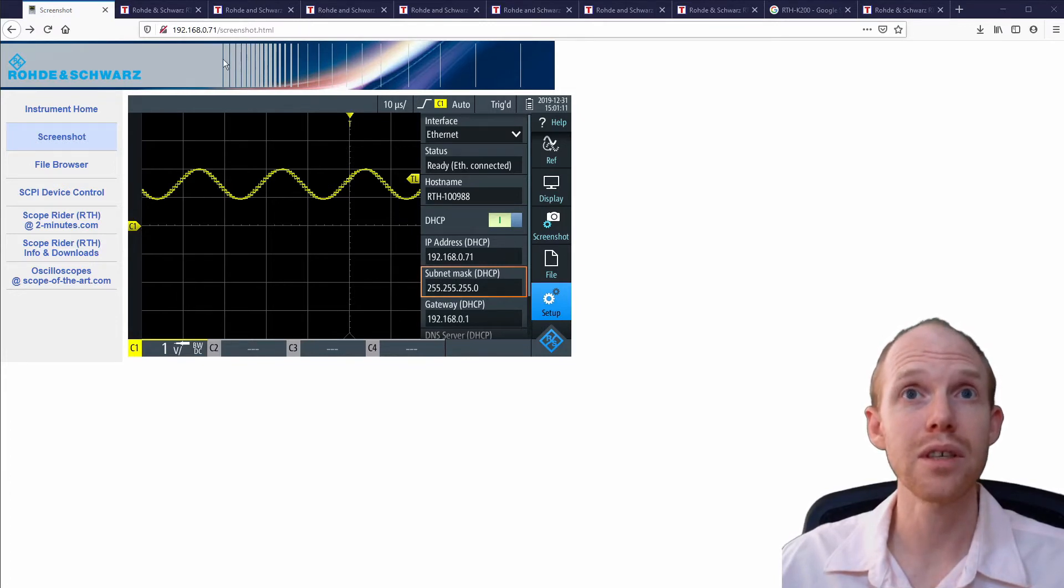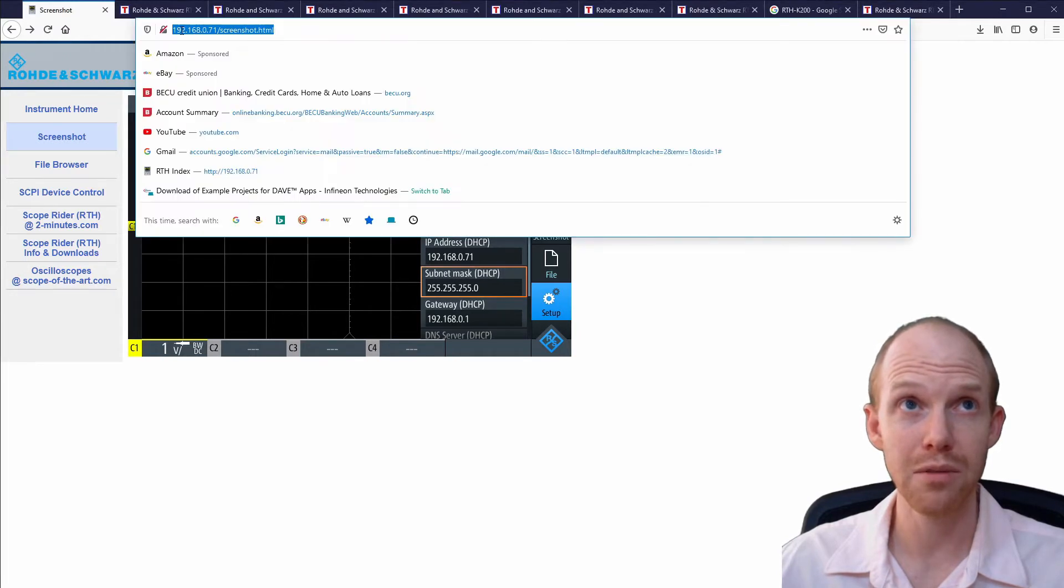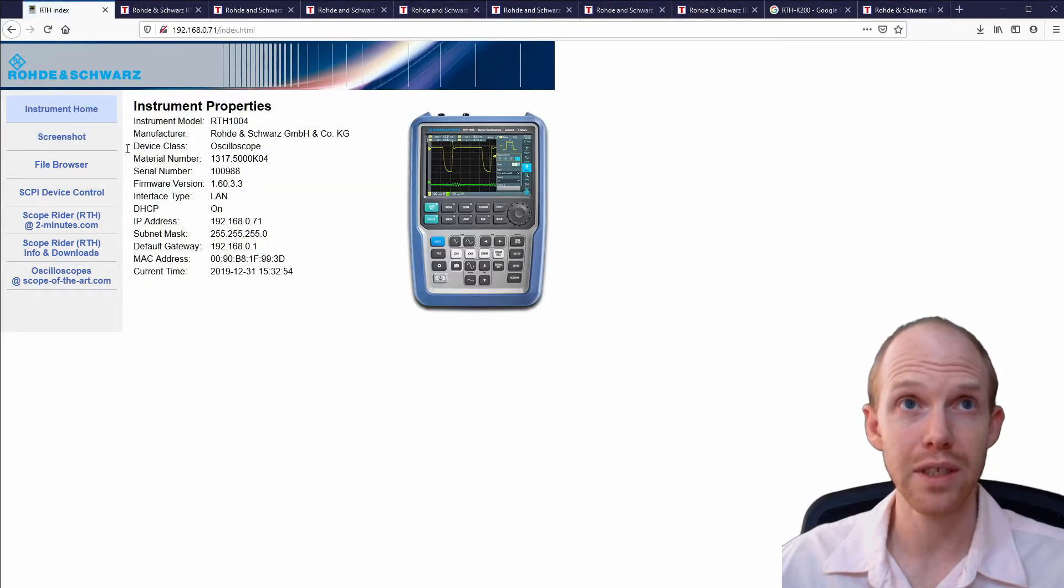So what you have to do is go into the setup on the scope, and you have this menu here, and you've got to click this DHCP button a couple of times on and off to get it to refresh and hook up with your LAN, and then get an IP address on your LAN, which mine is this one, 192.168.0.71. So that's what I put up here, and it loads this web interface here.